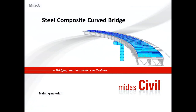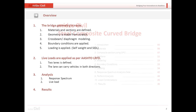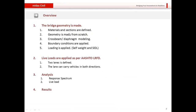Today we will be talking about a steel composite curved girder bridge. This is Arun Sharma from Midasoft. The session overview: we will start by defining materials and sections, create the geometry from scratch, model cross beams and diaphragms, apply boundary conditions including rigid links and supports, apply self-weight and superimposed dead load, then live load with HL93 vehicles per AASHTO LRFD. We will also cover response spectrum analysis and live load analysis, then perform the analysis and review results.